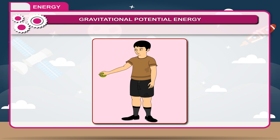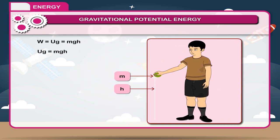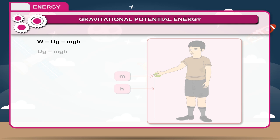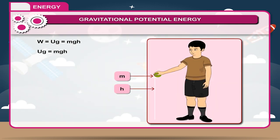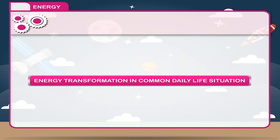Gravitational potential energy is the energy an object possesses because of its position in a gravitational field. Consider an object of mass m being lifted through a height h against the force of gravity. If g is the magnitude of gravitational acceleration, we can find the work done by the force. This work done is stored as gravitational potential energy, that is: W = U_g = mgh.